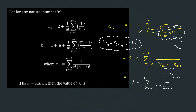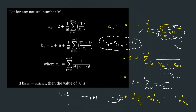Opening up this series gives 2 plus 1 over (n+1)C1 plus 1 over (n+1)C2, and so on. Now there is a trick: we write 2 as 1 plus 1, and further as 1 over (n+1)C0 plus 1 over (n+1)Cn+1, because 1 can be written as (n+1)C0 over (n+1)C0, and similarly for (n+1)Cn+1.